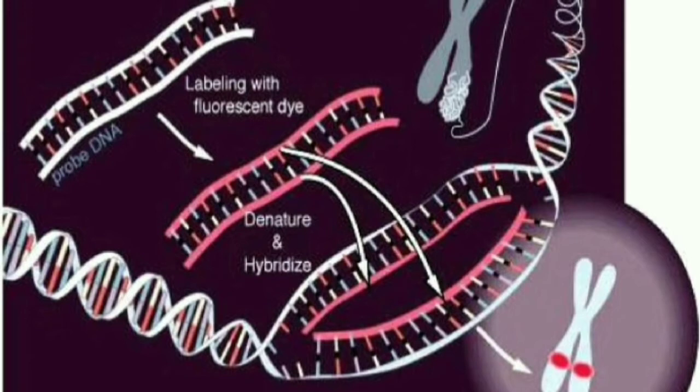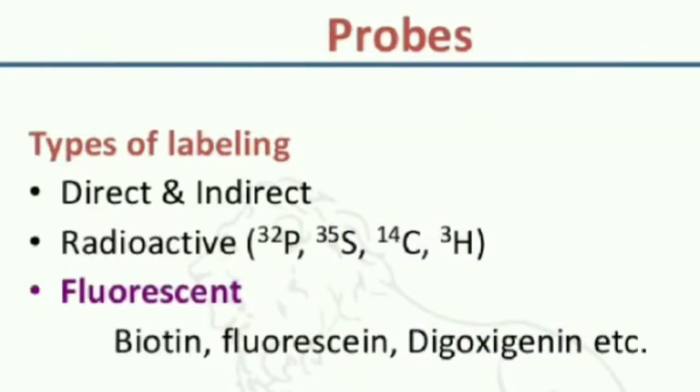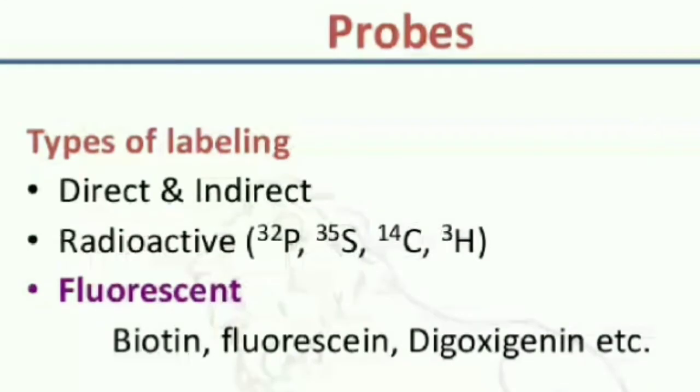We discussed earlier about labeling probes. A probe can be labeled using two techniques: direct and indirect. That is by using a radioactive label which can be P32, S35, C14, and even H3. The second method is by using a fluorescent, that is biotin, fluorescein, or even digoxigenin.